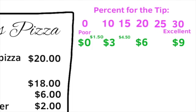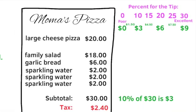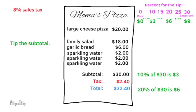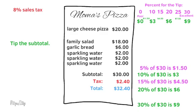representing a 15% tip. Add $1.50 to $6, and you'd have $7.50, representing a 25% tip. To review: a 10% tip for a $30 subtotal is $3, a 20% tip would be $6, and a 30% tip would be $9. A 5% tip would be half of a 10% tip, or $1.50. A 15% tip would be $4.50, and a 25% tip would be $7.50.